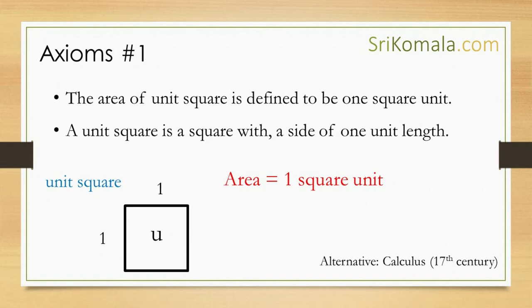Axiom number 1: the area of a unit square is defined to be 1 square unit. A unit square is a square with a side of 1 unit length, as shown in the figure.